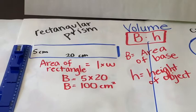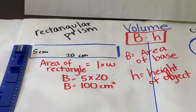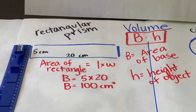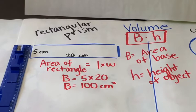We'll start with the rectangular prism. I measured the length of the side of the box and found that it was 5 centimeters. The width of the box was 20 centimeters, so when I find the area of the base — length times width — 5 times 20 gives 100 centimeters squared.